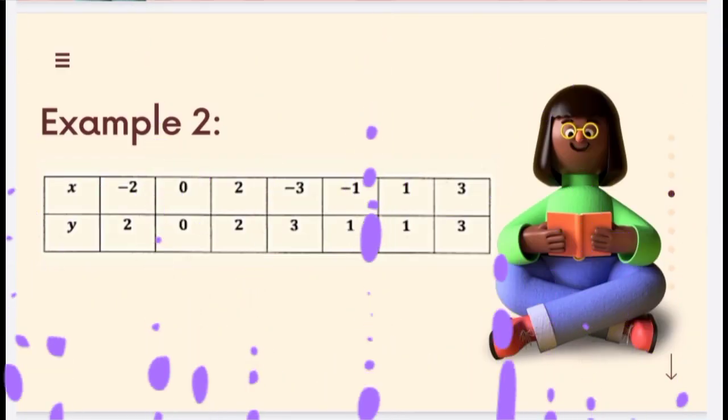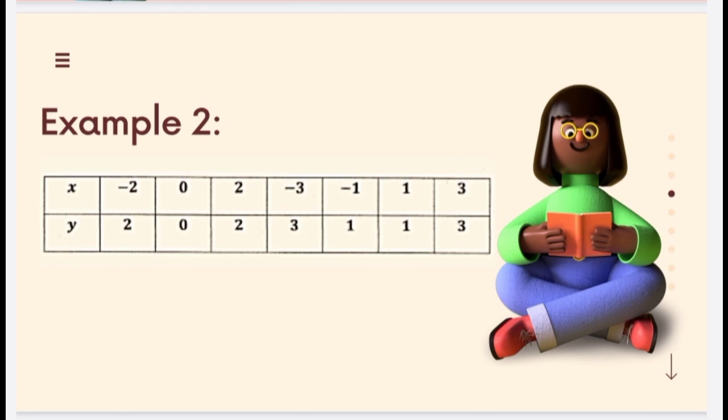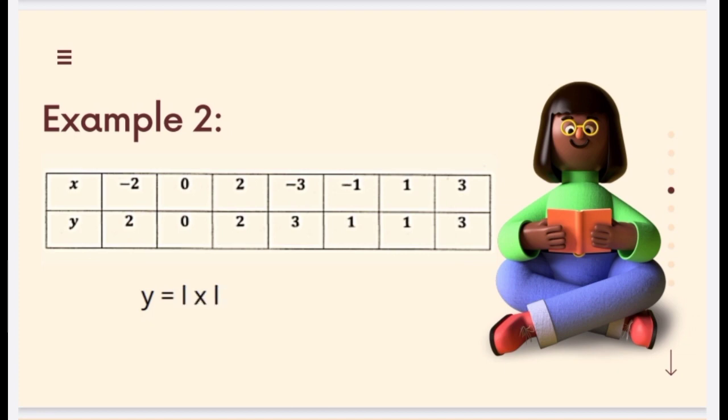Let us consider another example. As you can see, all the values of X and Y are almost the same except for the signs, and the values of Y are all positive. This is a special relationship named as absolute value. So our function rule would be y equals the absolute value of x, or f(x) equals the absolute value of x.